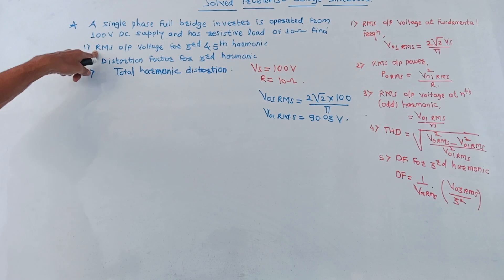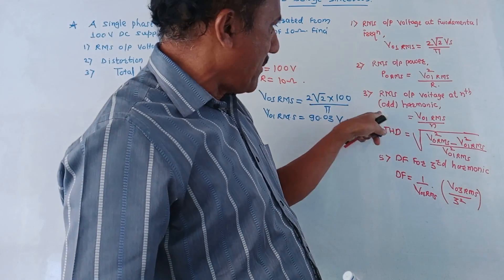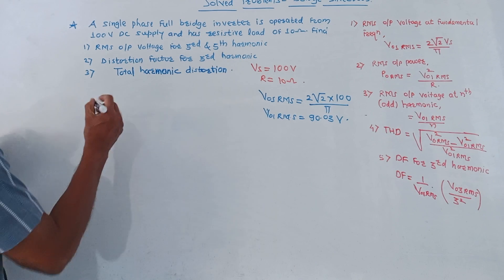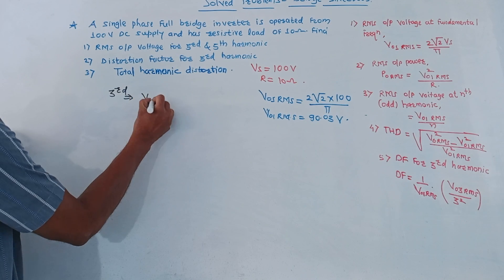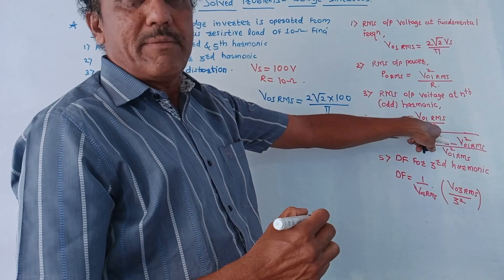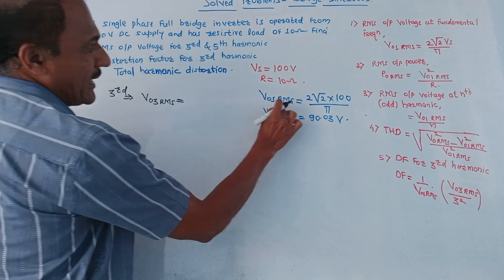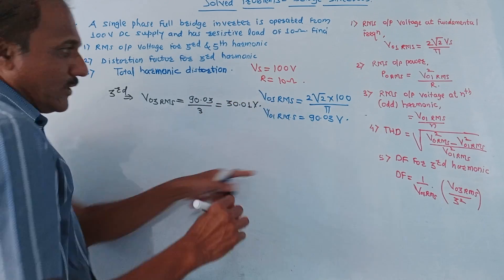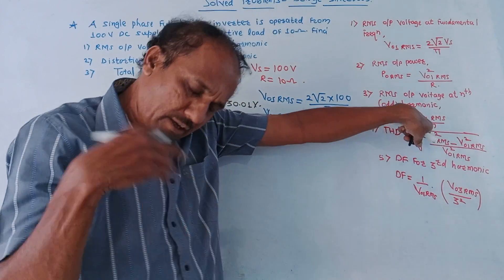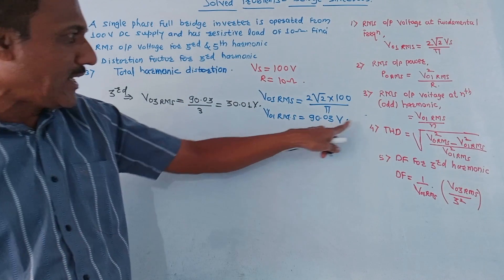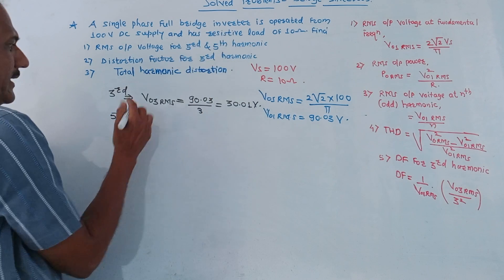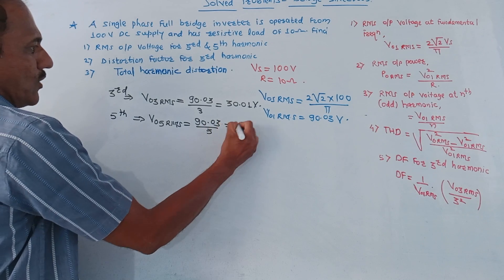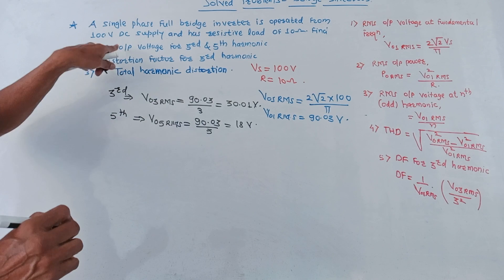Now let us start the actual calculations. RMS output voltage for third and fifth harmonic — the basic formula is V01RMS upon n for any odd harmonic. For third harmonic: V03RMS = V01RMS upon 3 = 90.03 upon 3 = 30.01 volt. For fifth harmonic: V05RMS = 90.03 upon 5 ≈ 18 volt. These are the calculations of the first part.